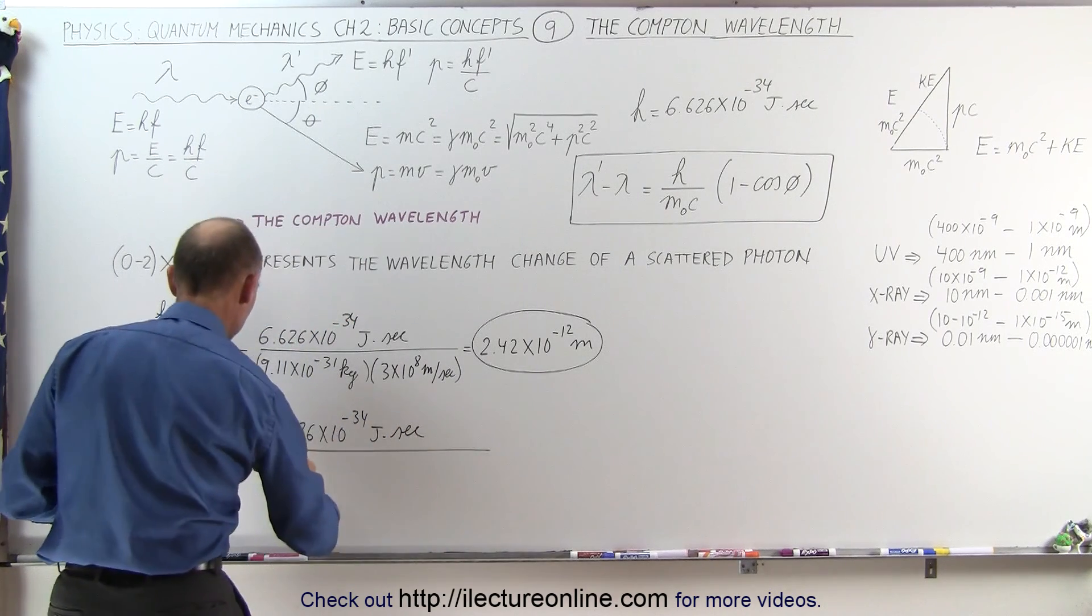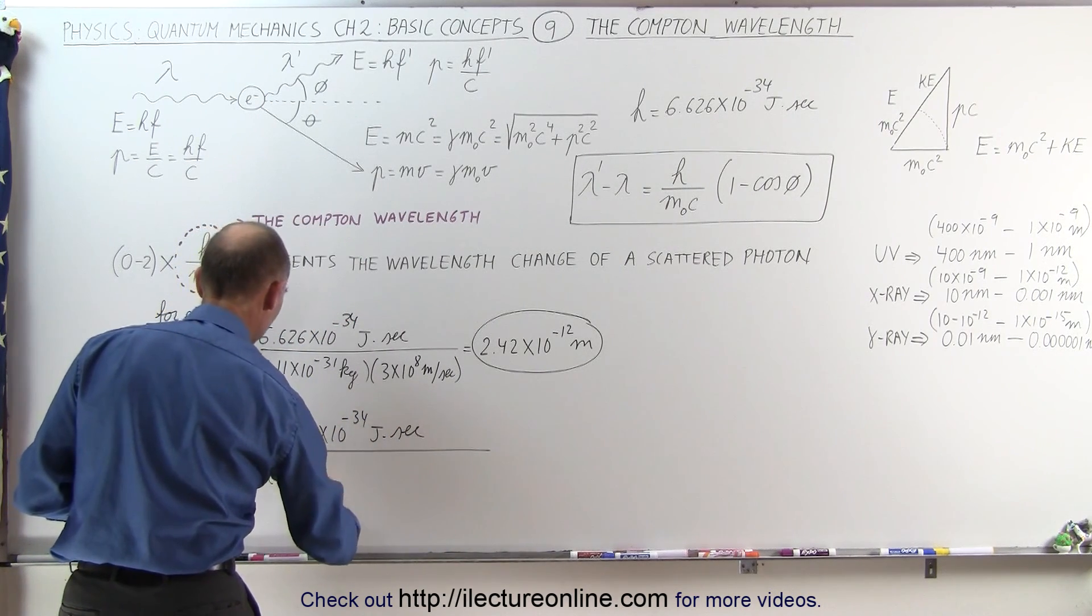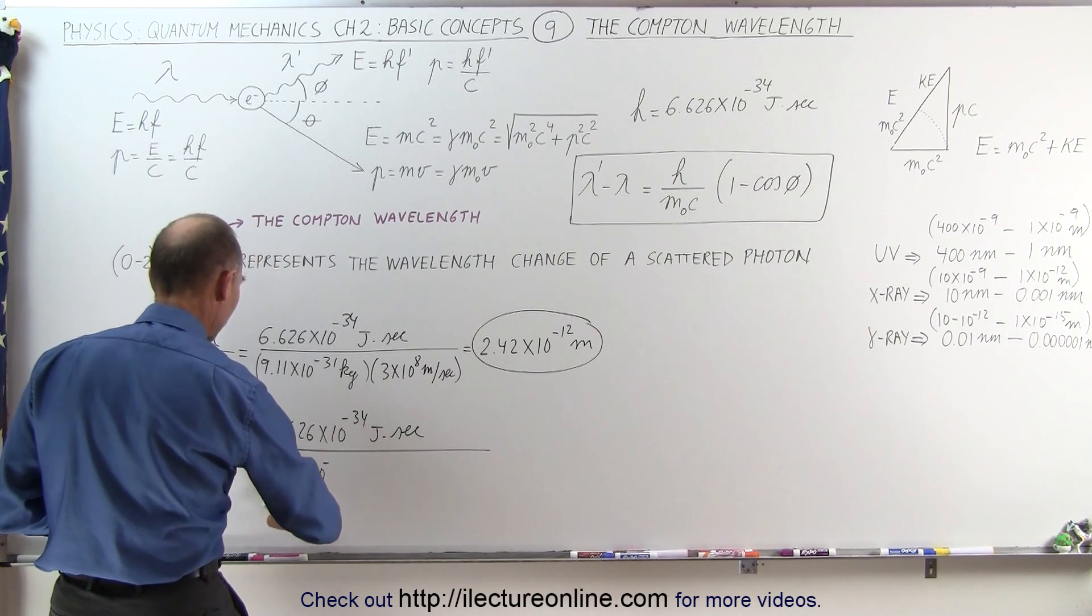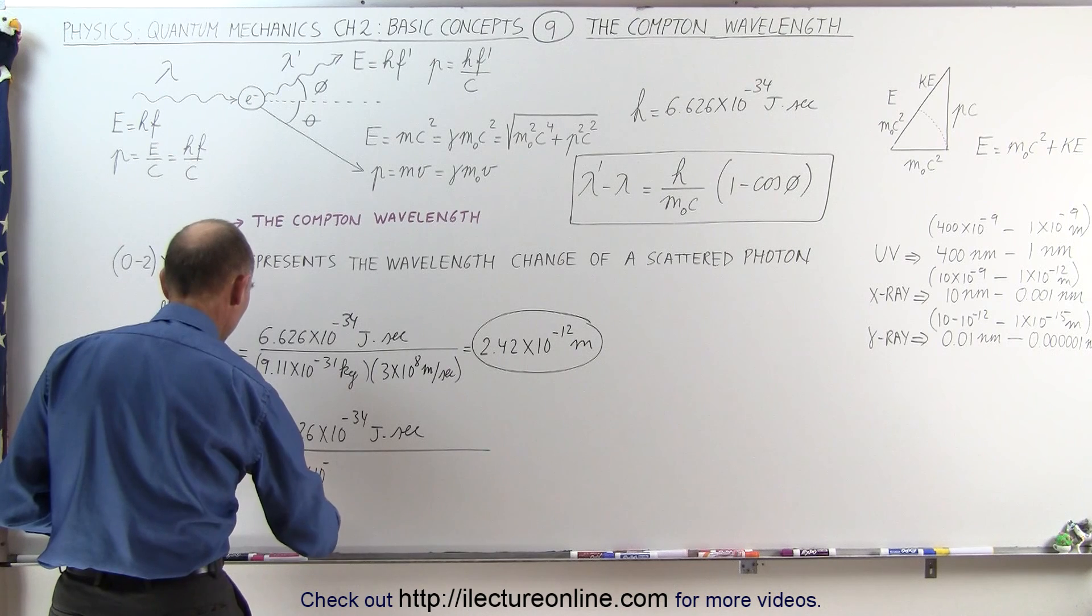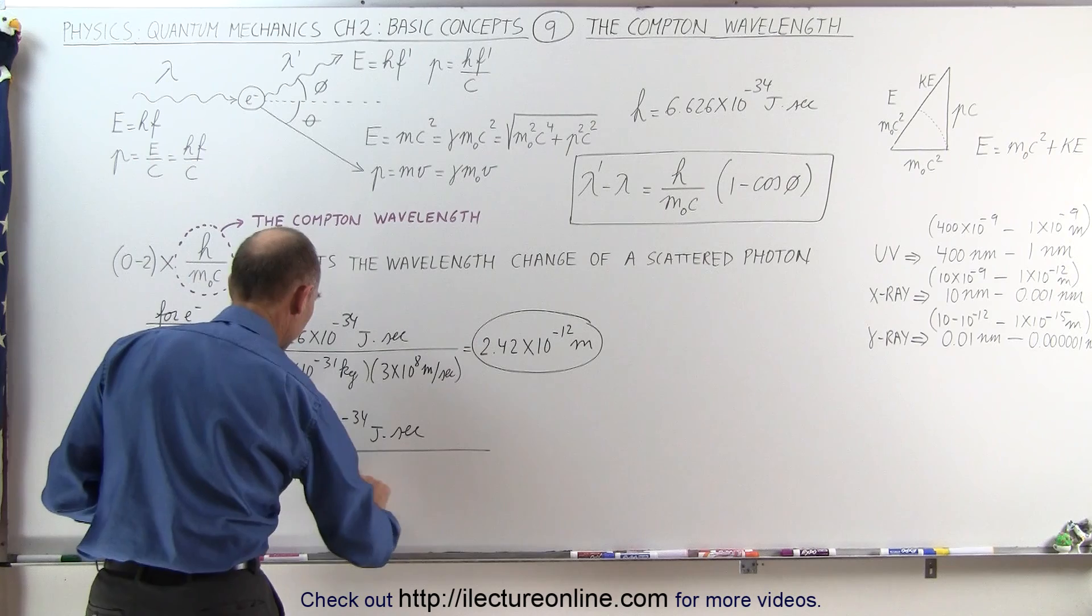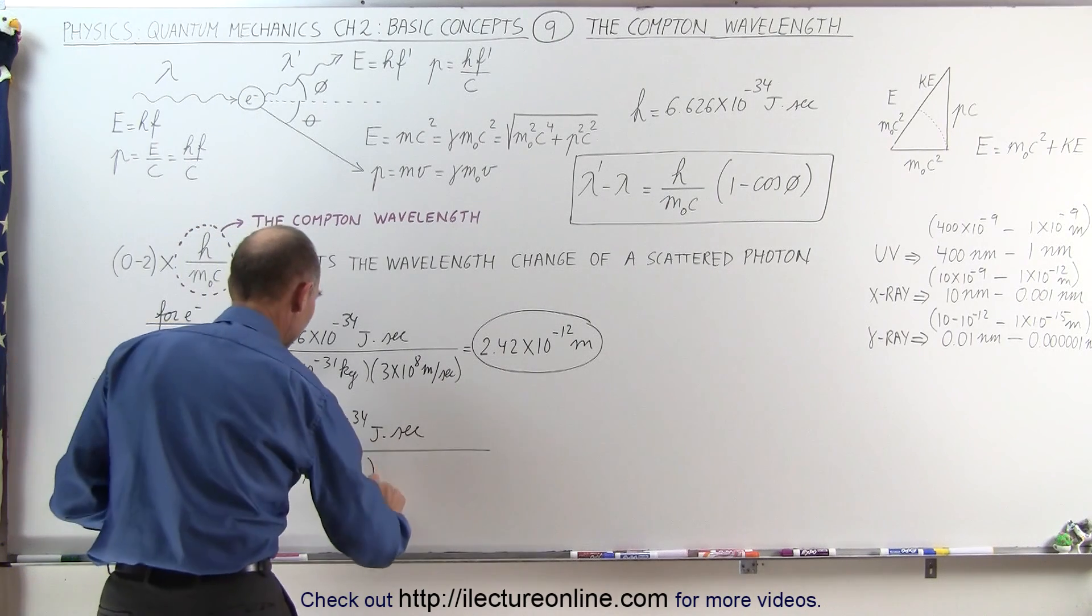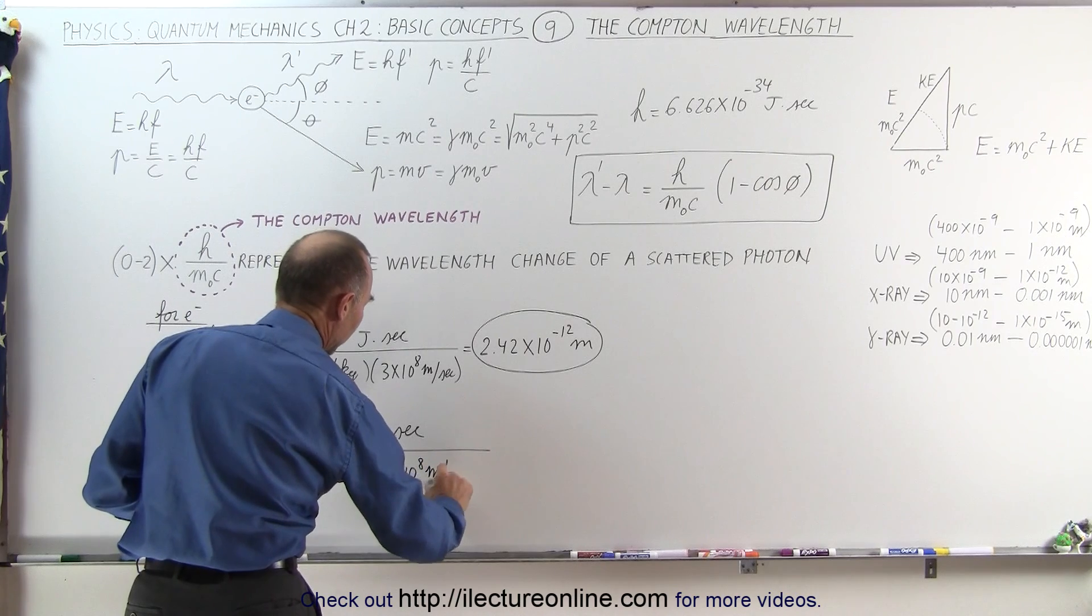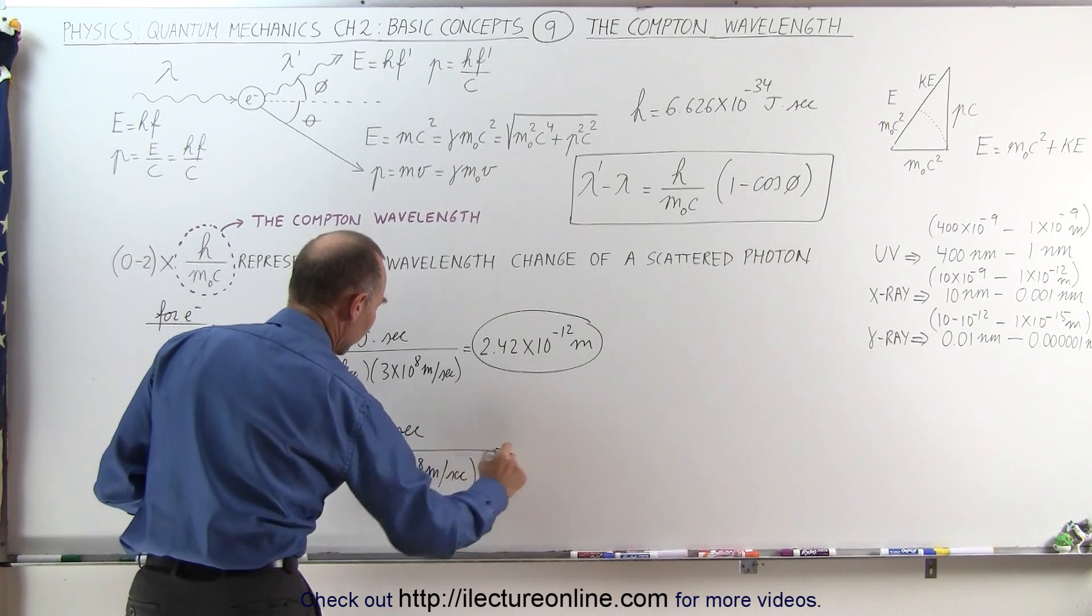divided by 9.11 times 10 to the minus—no, that's electron. We're not dealing with an electron, we're dealing with a proton, which is 1.67 times 10 to the minus 27 kilograms. They're much heavier than electrons, and 3 times 10 to the 8 meters per second is a good approximation for the speed of light.